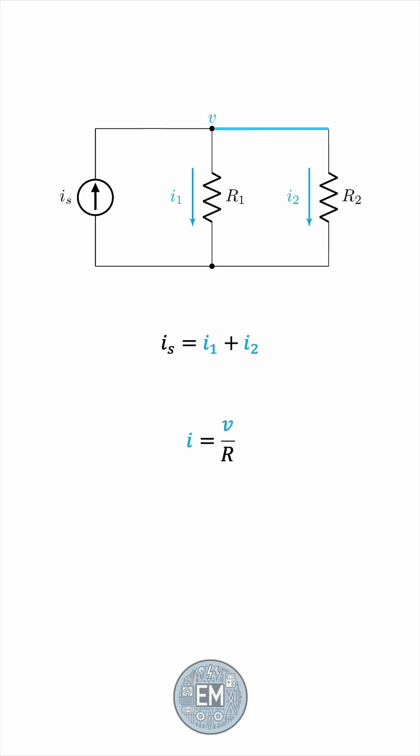So, this V acts like a constant of proportionality, making I inversely proportional to R. Let's derive the current division formula. We'll start from the fact that the voltage is the same for the two resistors. R1I1 is equal to R2I2.